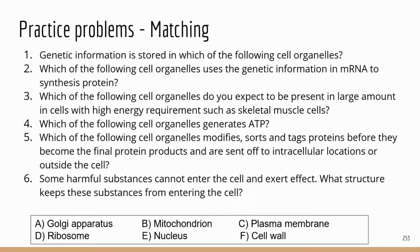Now, practice problems. I made a matching question — this is not the format of TEAS questions, but I want you to get as much practice as possible, covering six important cell structures. Number one: genetic information is stored in which of the following cell organelles? Genetic information is in the form of DNA, and DNA is stored in the nucleus. Correct answer is E.